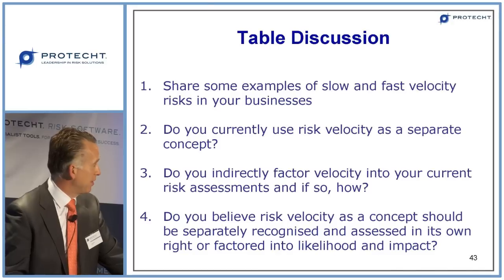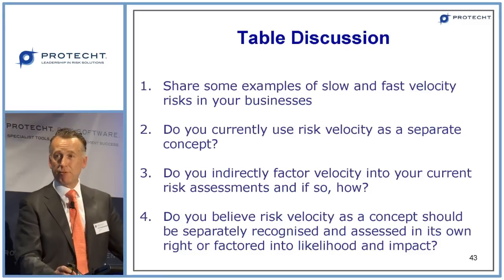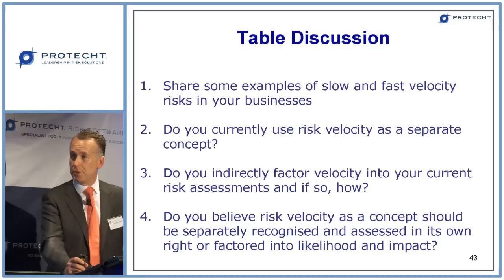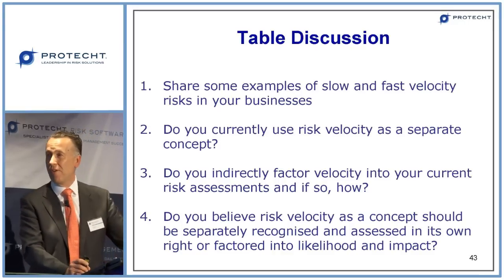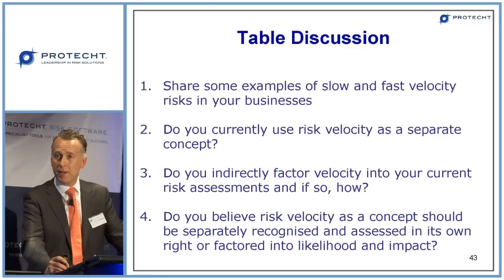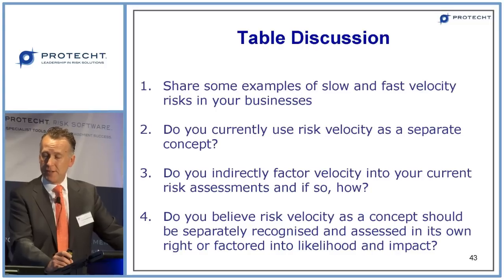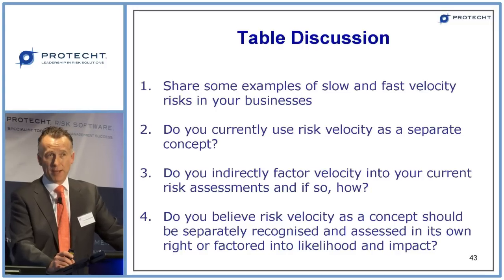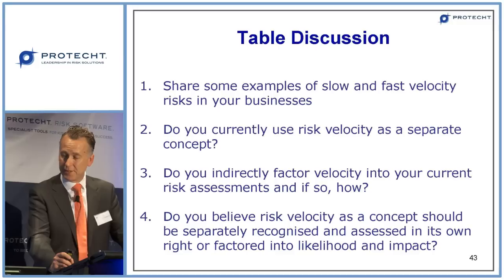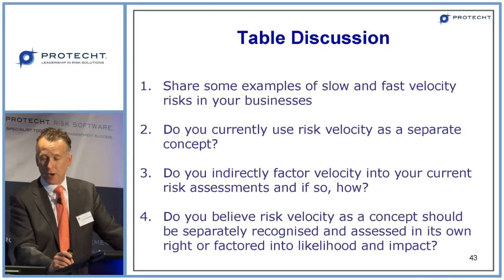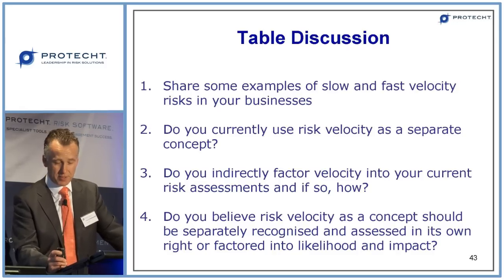There's no such thing as a free lunch, so now it's your turn. Four questions for your table groups — ten minutes. Number one: share examples of slow and fast velocity risks in your business, focusing on fast velocity risks and commenting on velocity-reducing controls. Number two: do you currently use risk velocity as a separate concept in your organisation, and if so how? Do you indirectly factor it into your current risk assessments? And finally — the ultimate question, requiring a consensus vote from each table — do you believe risk velocity as a concept should be separately recognised and assessed in its own right, or should it be factored into the current likelihood-impact scaling?